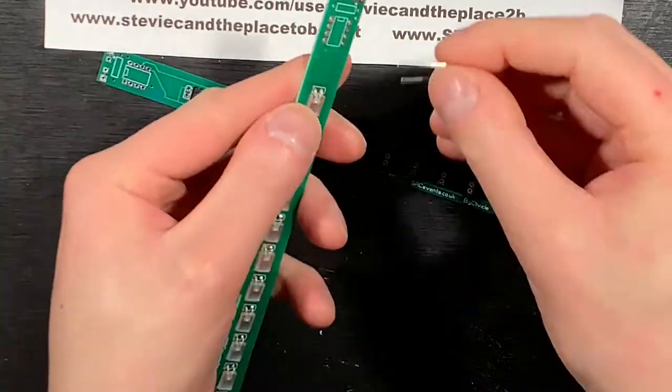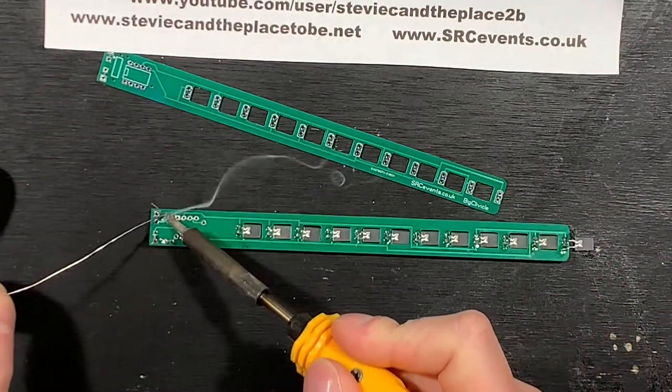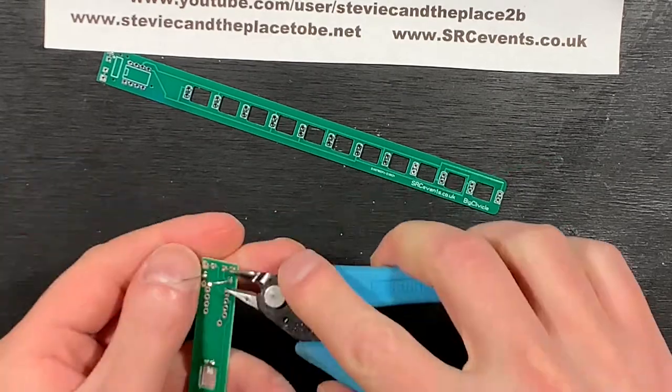Now that the LEDs are all in, I'll add the current limit resistor, which is 100 ohm value, and then the smoothing capacitor, which is 33 microfarads.